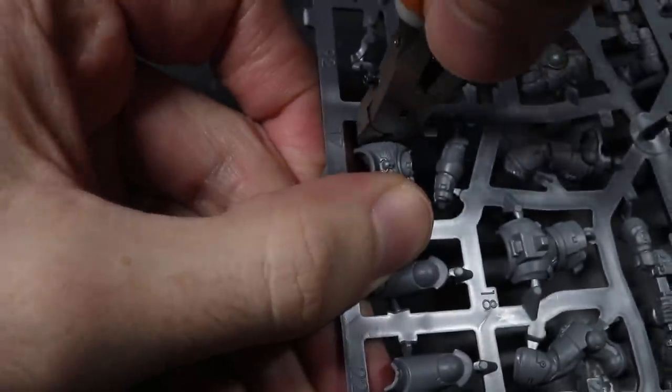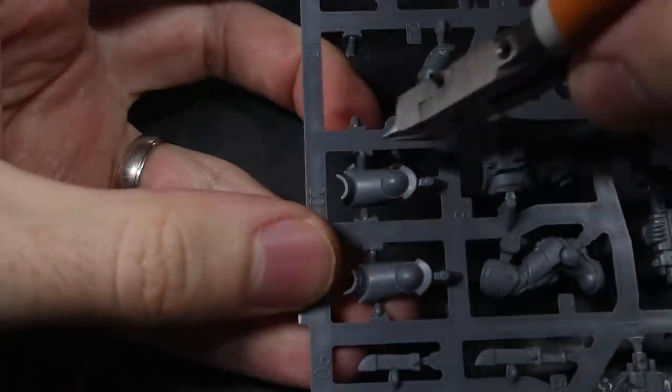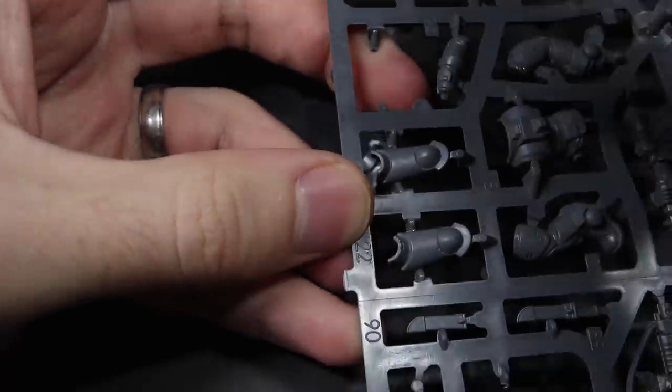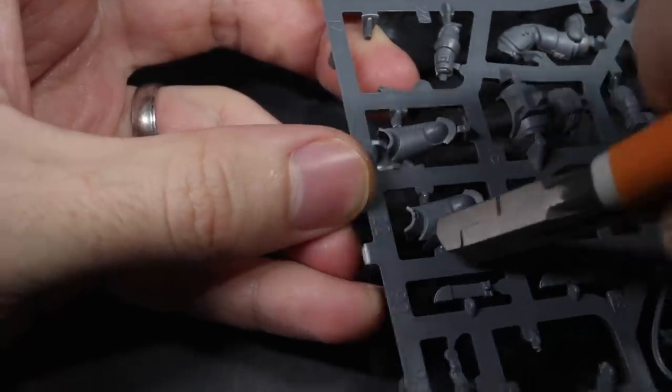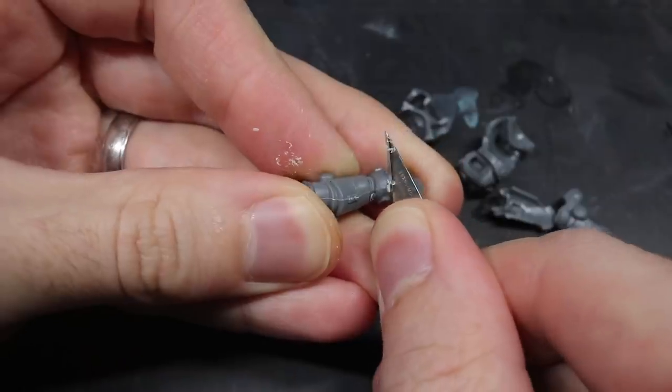The basis of this conversion was the standard Primaris Intercessor but the conversion I'm using here can be added to pretty much any Primaris Space Marine. I began by removing the basic components required to build an intercessor from the sprue before cleaning up any mould lines and remaining sprue tabs.